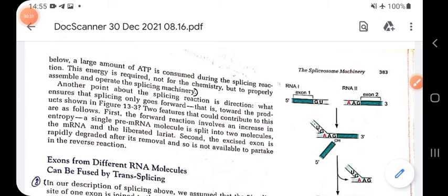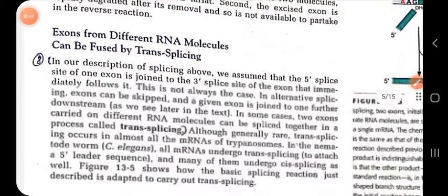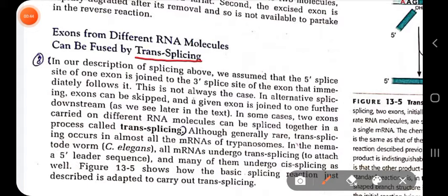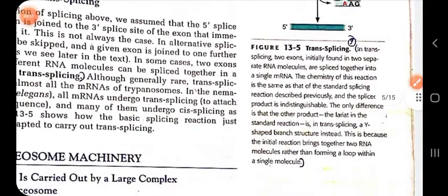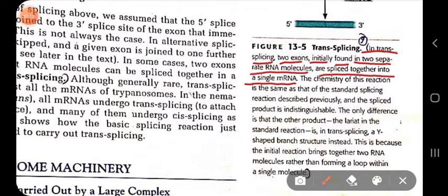I'm going to discuss a new term called trans-splicing. In simple words, as shown in this figure, in trans-splicing two exons initially found in two separate mRNA molecules are spliced together into a single mRNA.